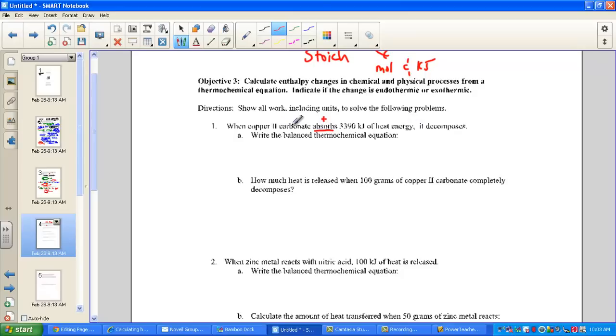Copper 2 carbonate absorbing positive value for endothermic 3390 kJs of heat energy and it decomposes. Pull out that helpful hint sheet. Helpful hint number 3 talks about carbonates and the way they decompose. Copper carbonate CuCO3 when heated will decompose. Carbonates will release carbon dioxide, leaving you with the metal oxide - copper oxide and carbon dioxide. When a carbonate decomposes, it gives us a metal oxide and carbon dioxide gas.